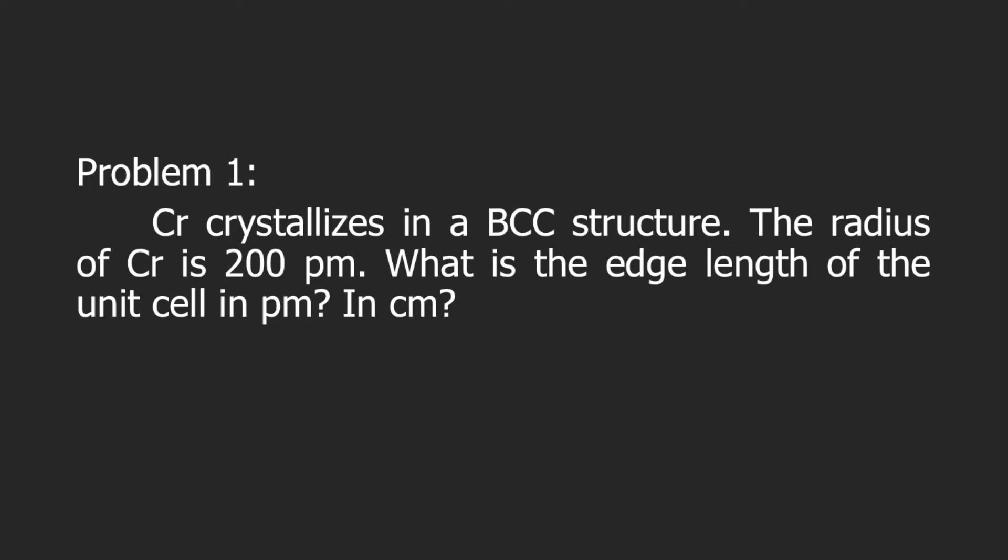So the problem says that the unit cell has a BCC structure. Again, the formula for the edge length for BCC is 4r divided by square root of 3. If you read the problem, it says here that the radius of chromium is 200 picometers. So r is equal to 200.